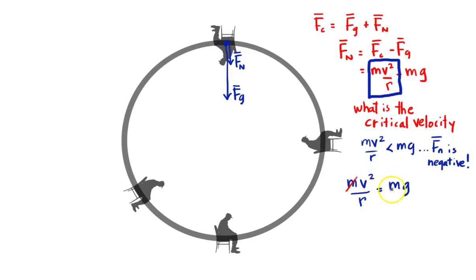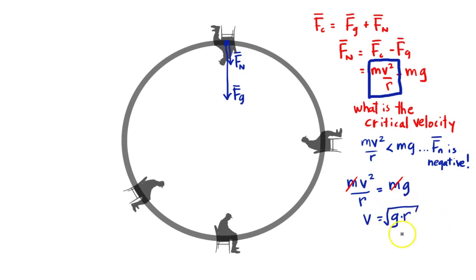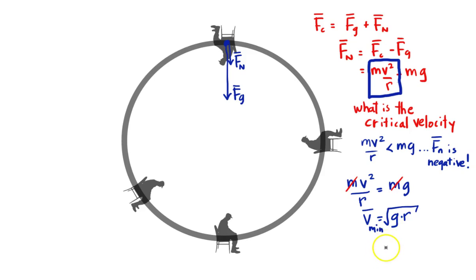So I need a minimum velocity where mv²/r equals mg, at which point I have a normal force of zero — which is okay. My masses cancel, and v equals the square root of g times r. So the minimum velocity is the square root of 9.8 times the radius. That's the minimum velocity to stay in that circular path. Make sure you make a note of this.